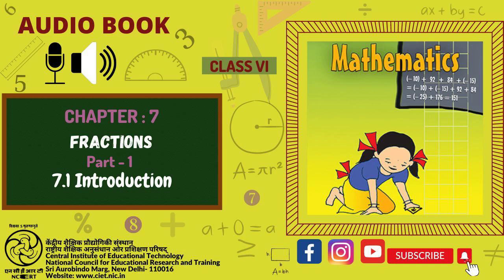Try these. 1. Give a proper fraction. A. Whose numerator is 5 and denominator is 7. B. Whose denominator is 9 and numerator is 5. C. Whose numerator and denominator add up to 10. How many fractions of this kind can you make? D. Whose denominator is 4 more than the numerator. Give any 5. How many more can you make?